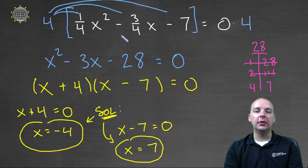So again, when you have coefficients that are fractions in a quadratic equation, just get rid of the fractions to begin with by multiplying both sides of the equation by the least common multiple of all your denominators in your coefficients.